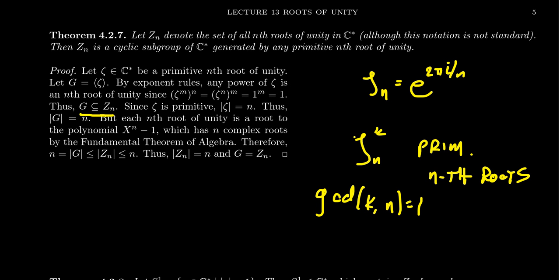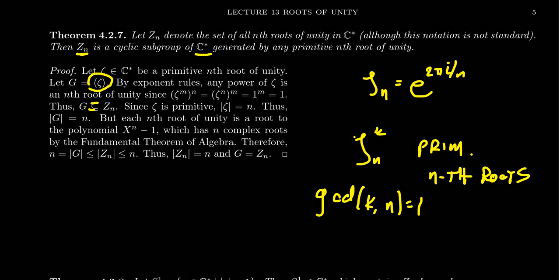Now, g is of course a group, so you could say g is a subgroup of Zn, but we haven't yet established that Zn is itself a group, so it doesn't make sense to talk about subgroups. We do see that in terms of set containment, the cyclic subgroup g is contained inside of Zn. It's going to be our goal to prove equality — we want to show that g equals Zn. And since g is the cyclic subgroup generated by zeta, that would prove that Zn is a cyclic subgroup of C star.